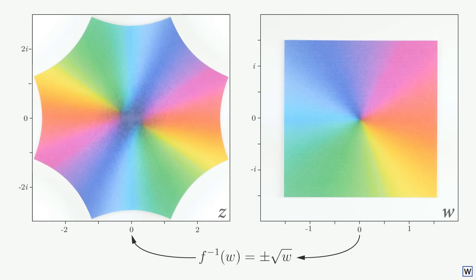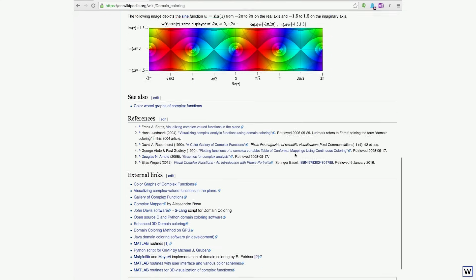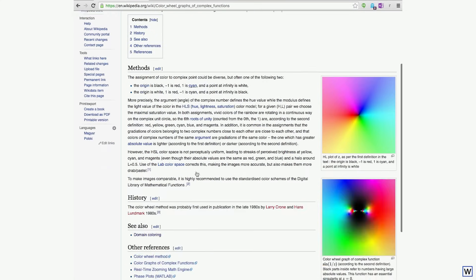By following where the various colors from our color wheel are mapped, we can learn a tremendous amount about how our complex function works. For example, we can really get a feel here for how the square root function unfolds our w plane into two copies of itself. If we follow a path around the z plane, we encounter every color twice. There's a ton of cool and way more detailed things we can learn from these domain coloring plots, and the Wikipedia article is a great place to start.